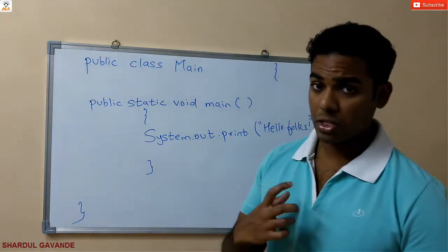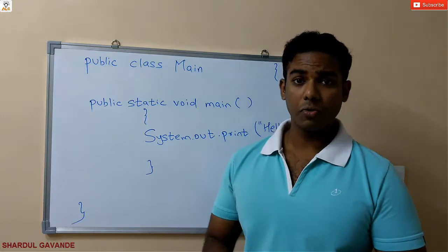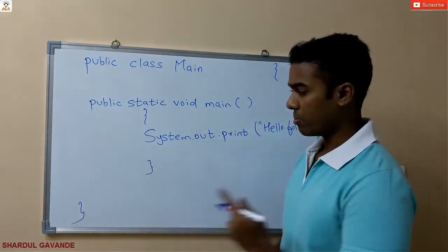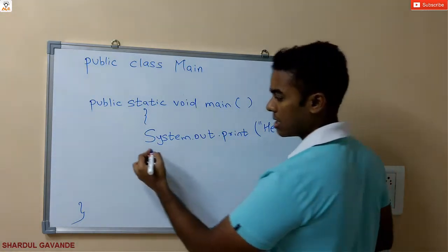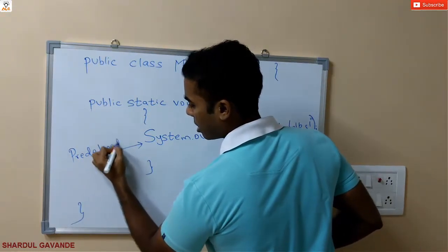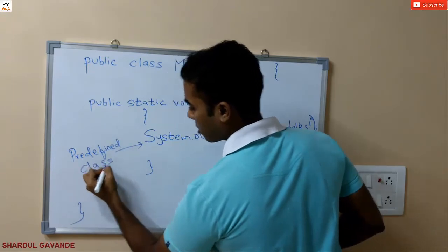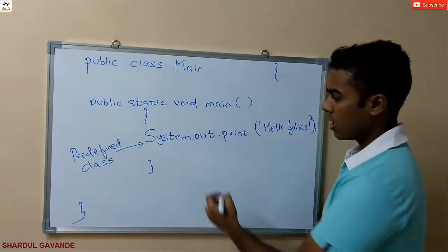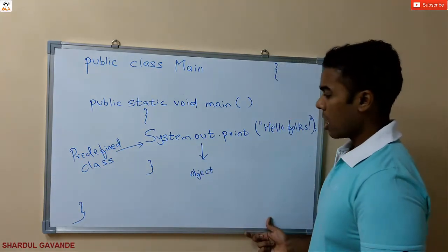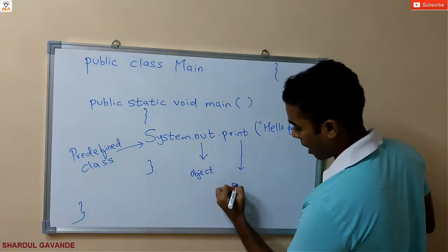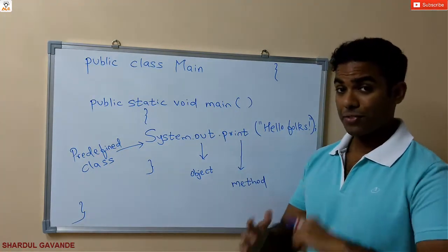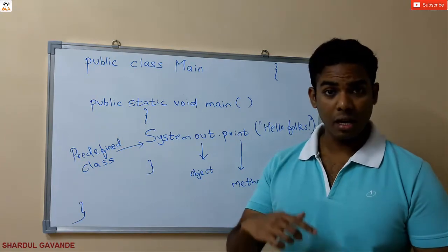Now what exactly is System? As we know, any class name starts with the first letter as capital. Here I have System whose S is capital, which means this is a class — or we can say this is my predefined class. And out is my object, and print is my method.